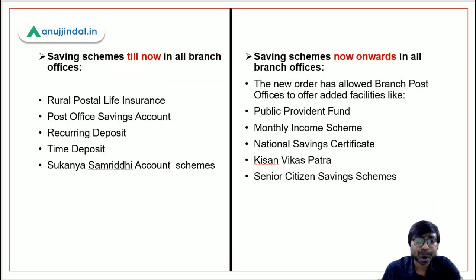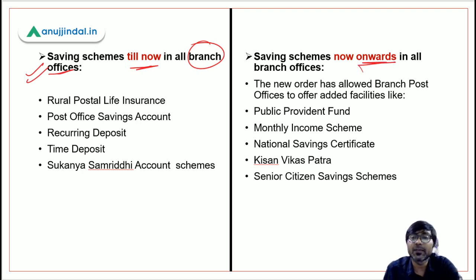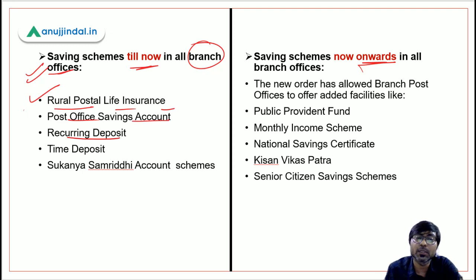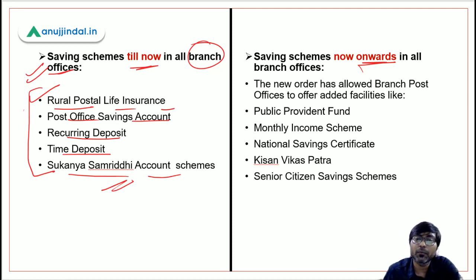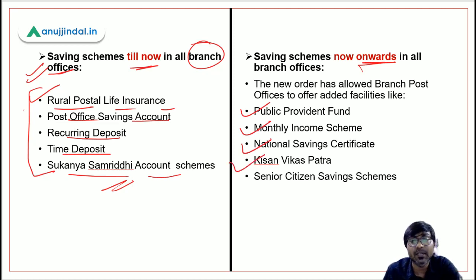Previously, the branch post offices had: rural postal life insurance, post office savings account, recurring deposit, time deposit, and Sukanya Samridhi account — five schemes. But now, after the new order, PPF, monthly income scheme, NSC, Kisan Vikas Patra, and Senior Citizen Savings Scheme have also been added. This will greatly benefit people in rural areas.